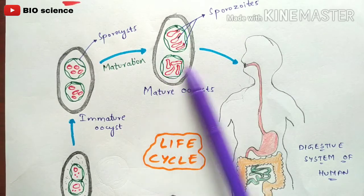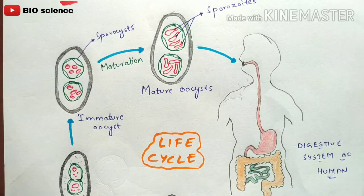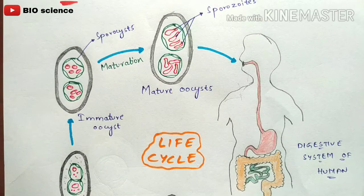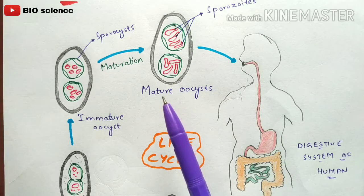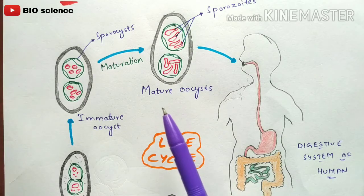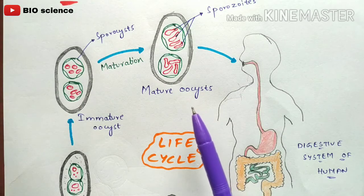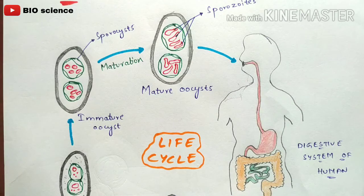The major part of the life cycle takes place in the epithelial cells themselves. Hence, cysto-isosporiasis is considered a human intestinal disease. Now let us discuss the symptoms seen in a person infected with isosporiasis or cysto-isosporiasis.